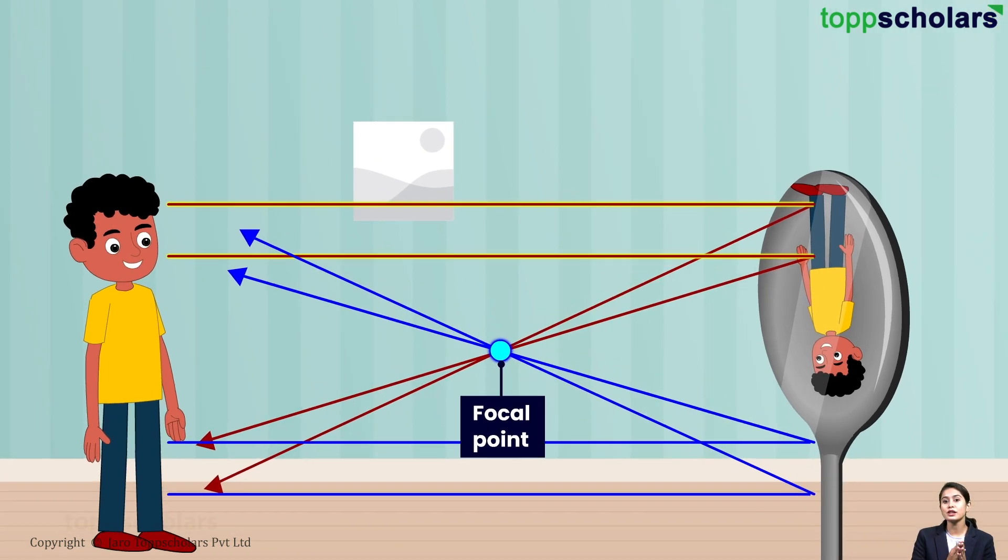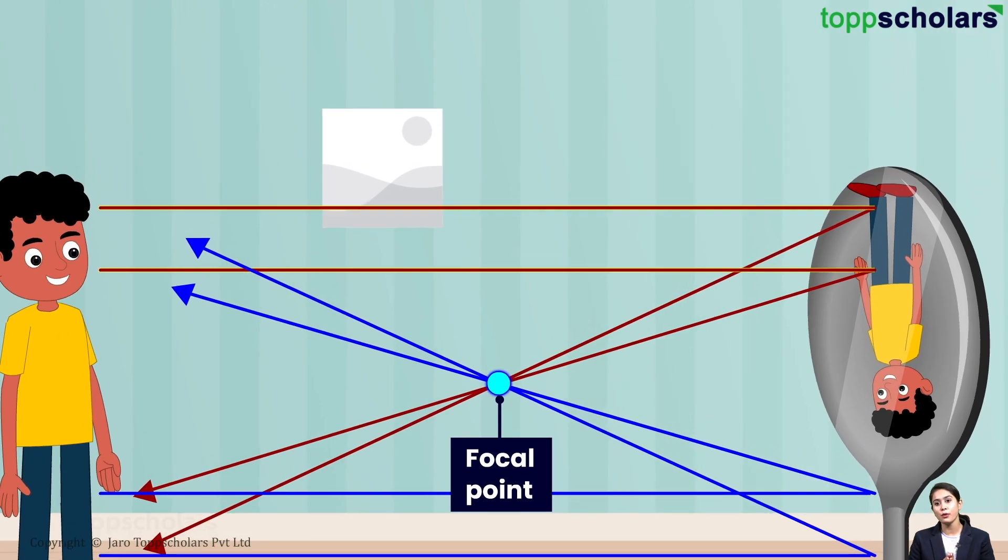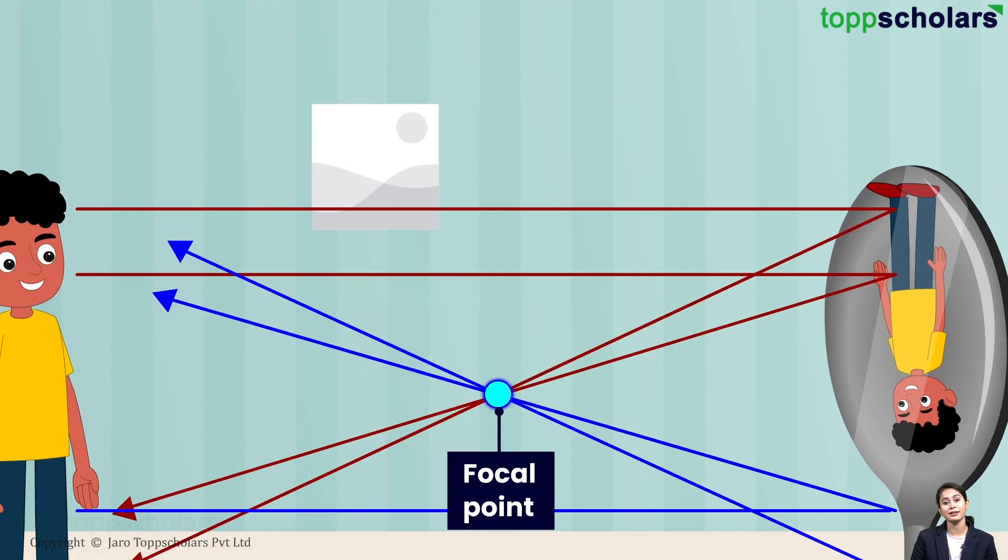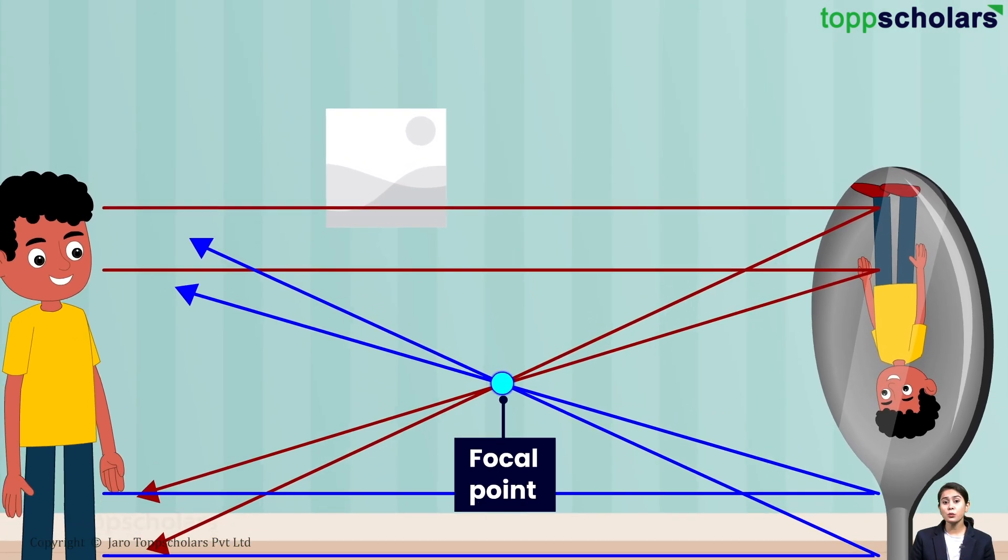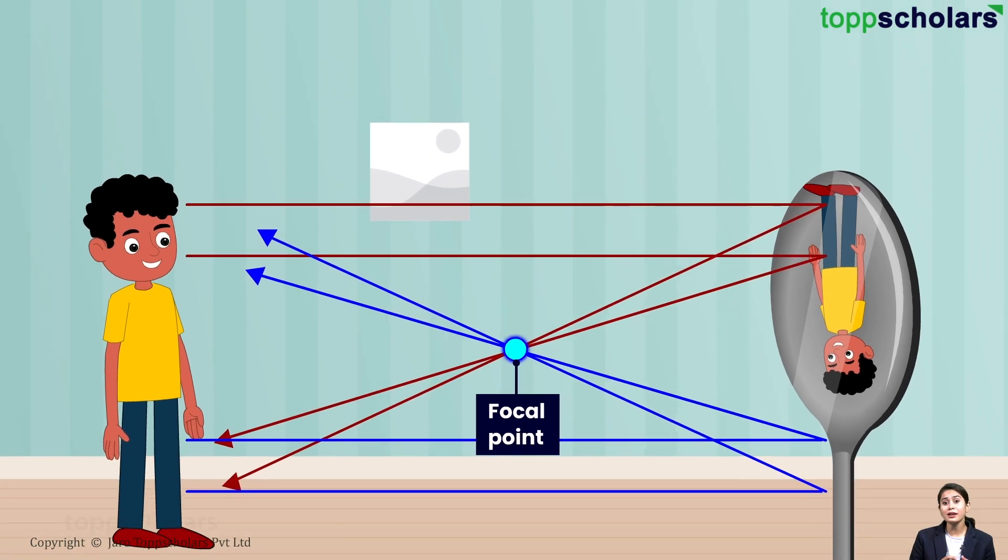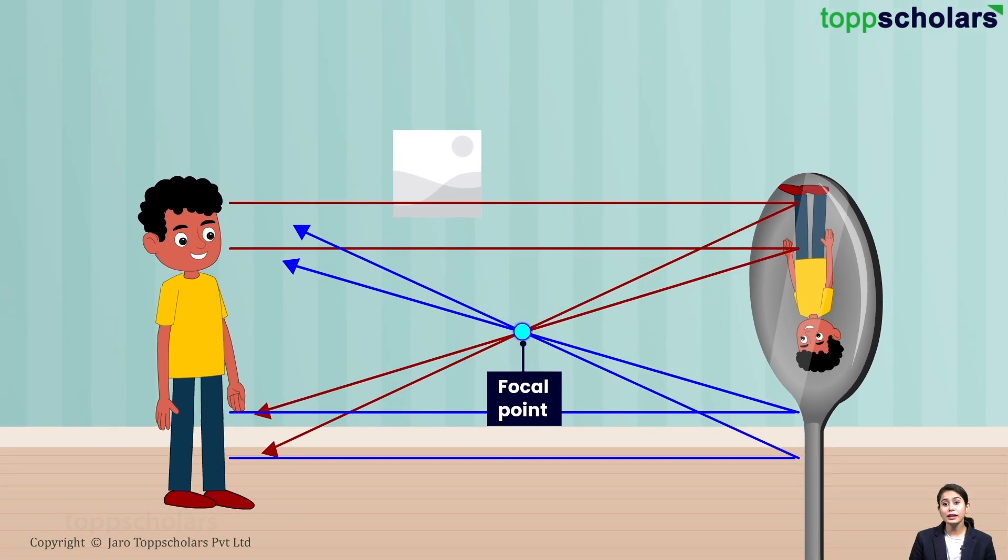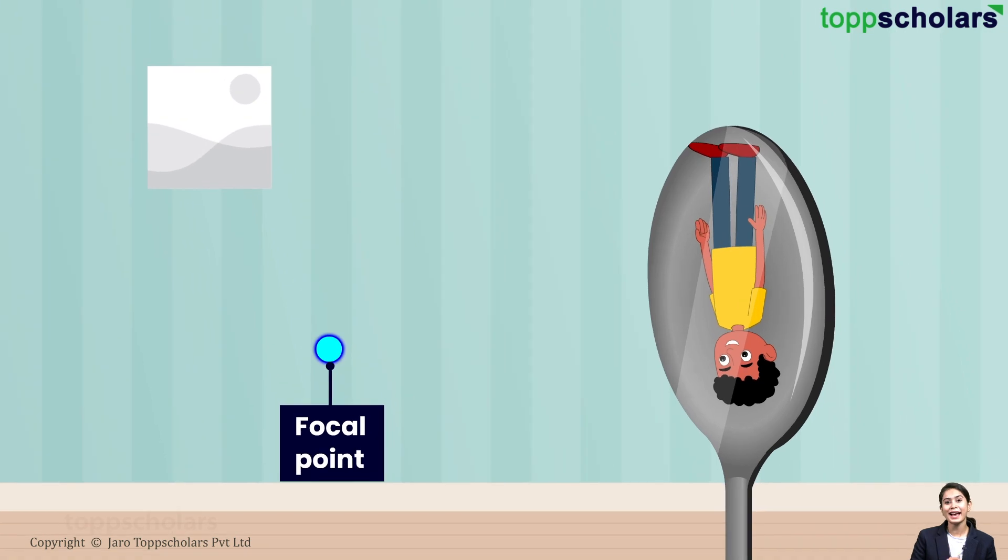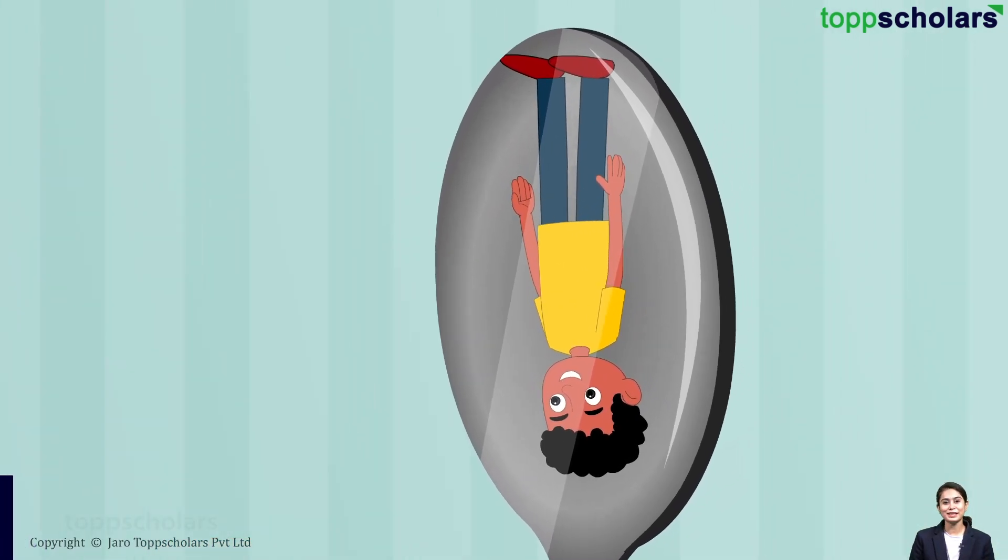So, the rays from the top of the reflection are at the bottom of what your eyes are seeing. Since what we see is where the light came from, you see your toes above your head. That is an upside down image.